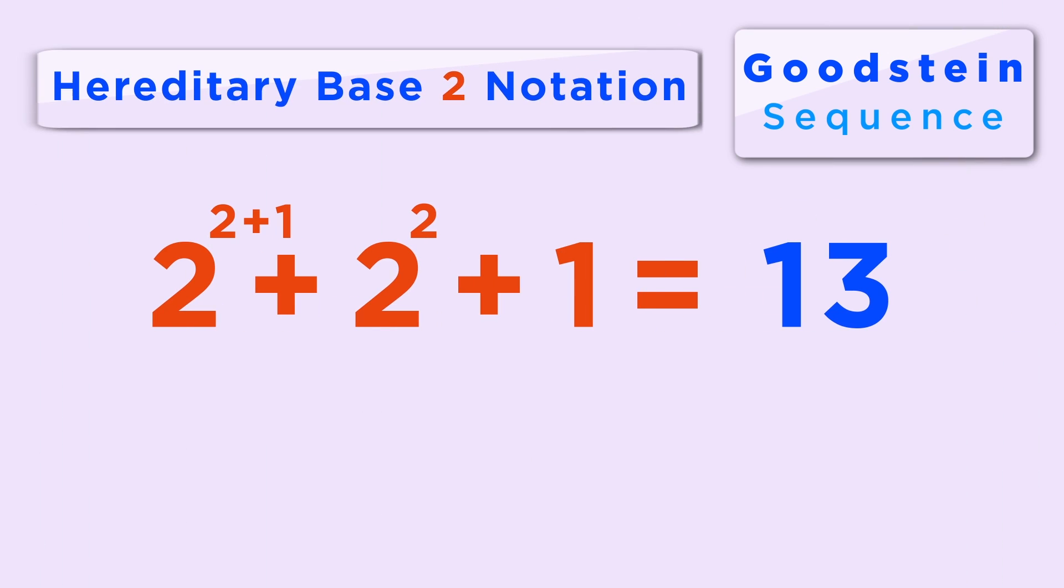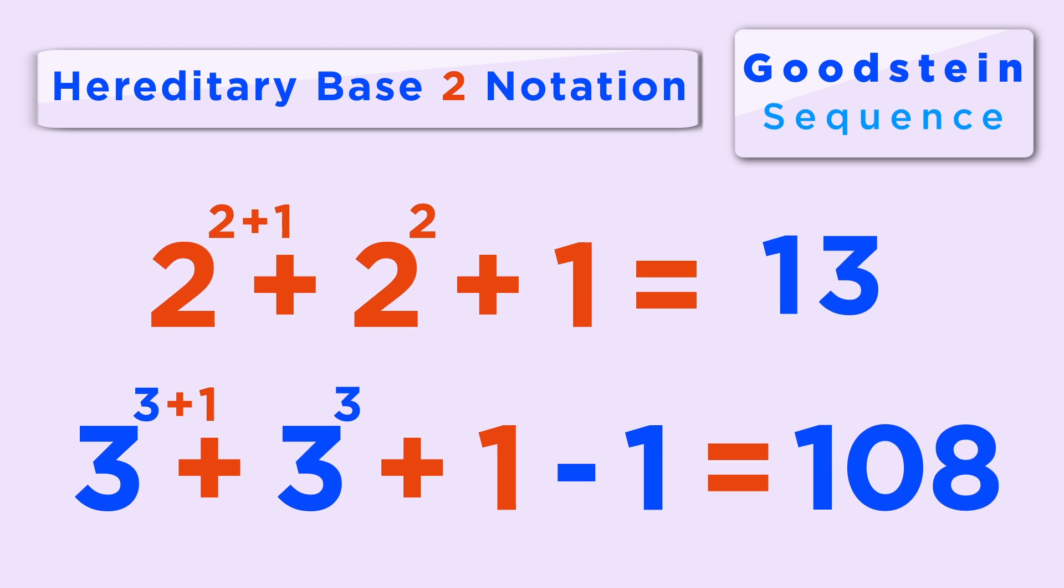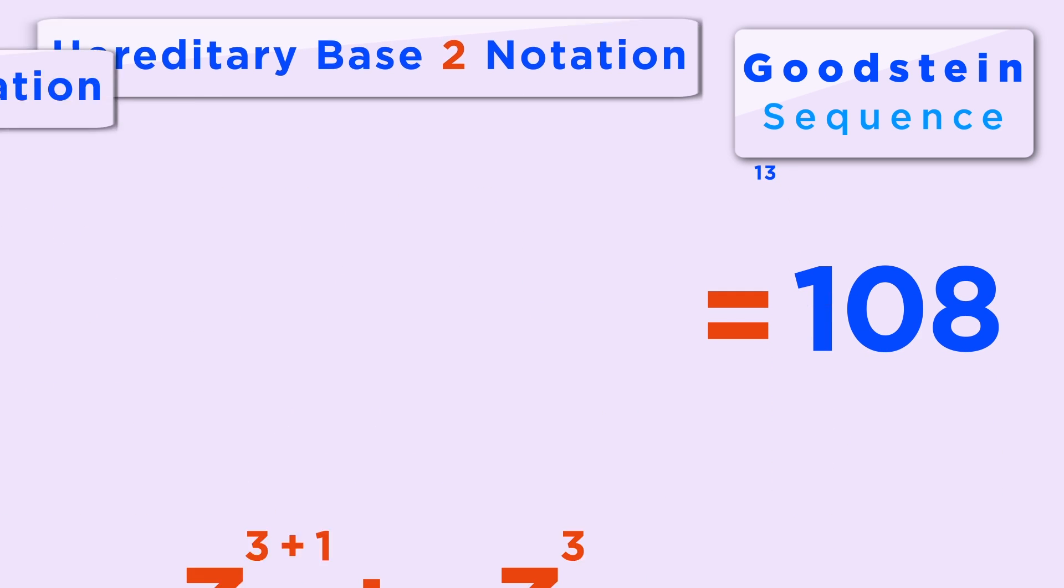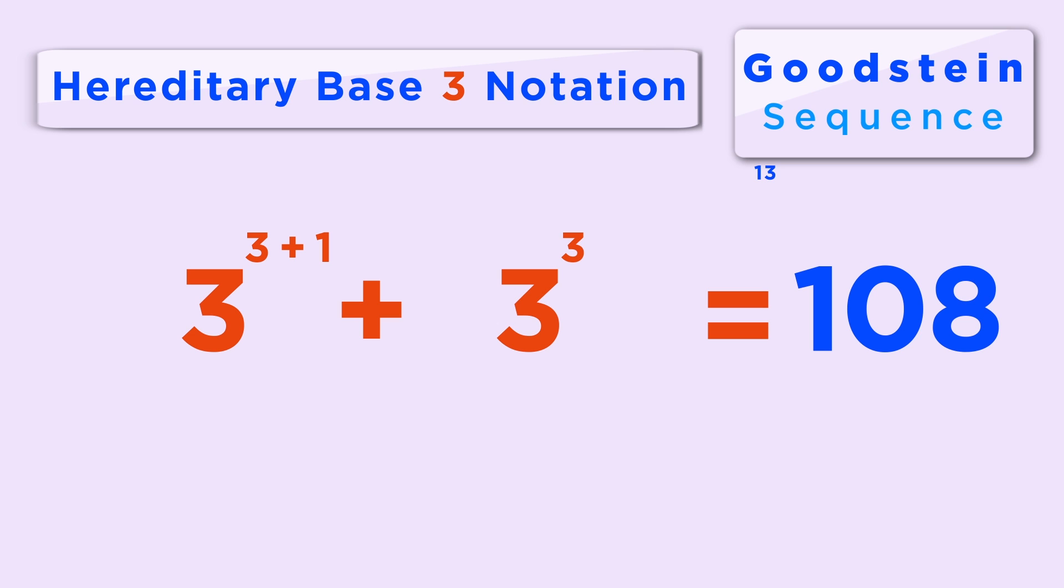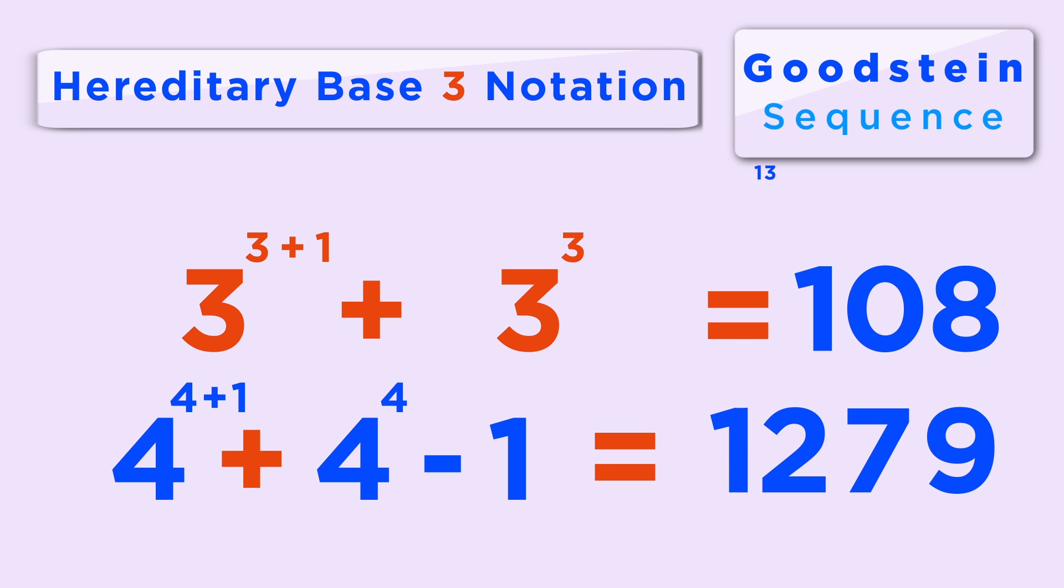We start with 13 written in hereditary base 2 notation. Then, convert all the 2's to 3's and subtract 1. The result is 180. Write 108 in hereditary base 3 notation. Then, convert all the 3's to 4's and subtract 1.